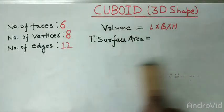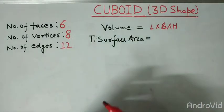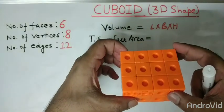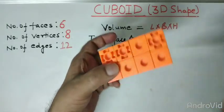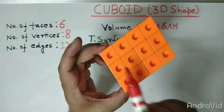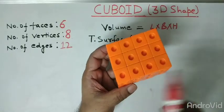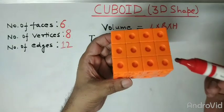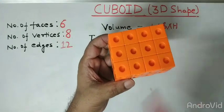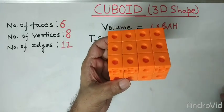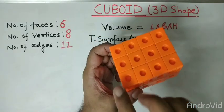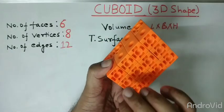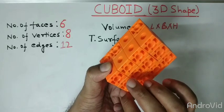Now we will find out the total surface area of a cuboid. What do we mean by total surface area? It means the area of all the faces. How many faces are there in a cuboid? We are having six faces, as we already counted. Now we will find out the area of each face. The important thing here is that the area of opposite faces will be equal to each other in a cuboid.